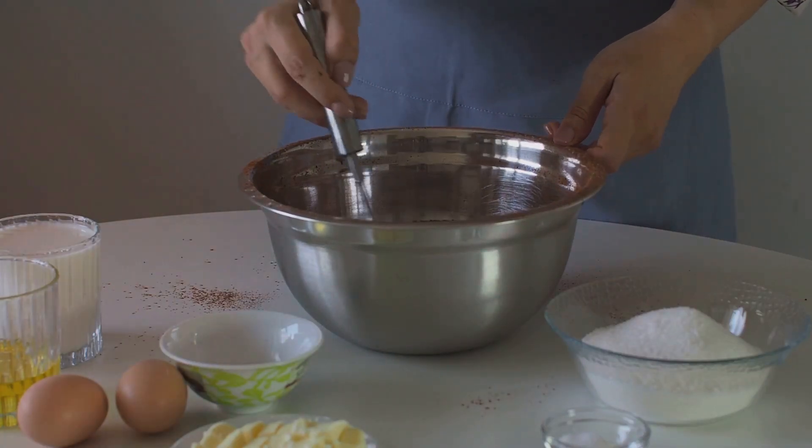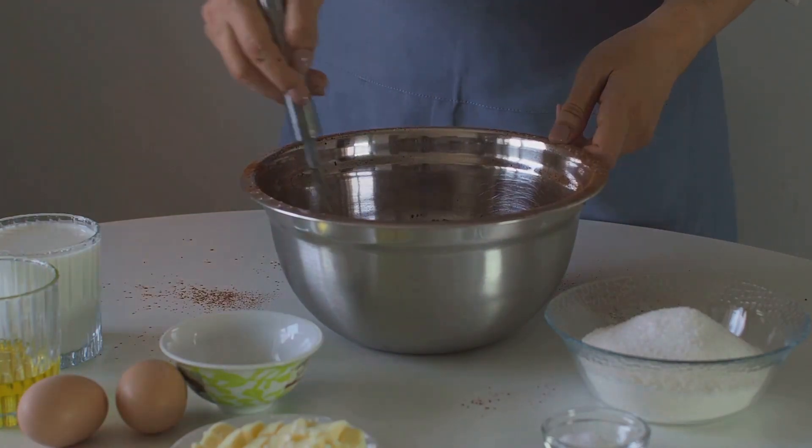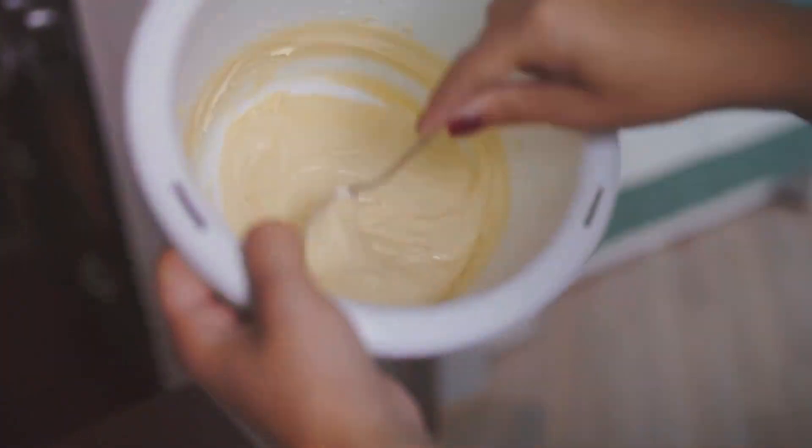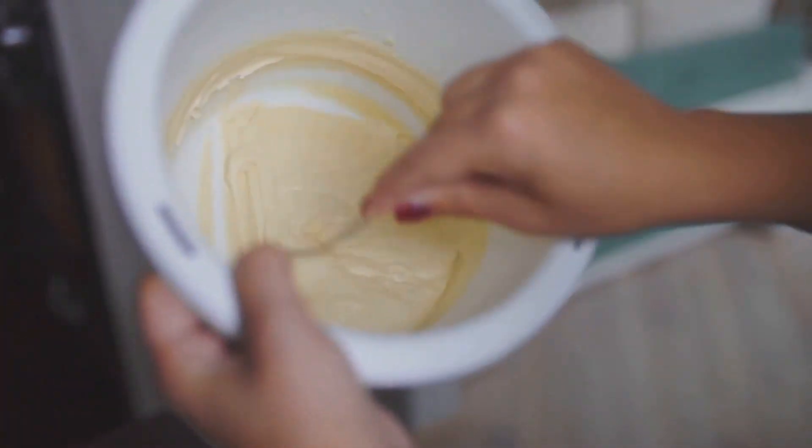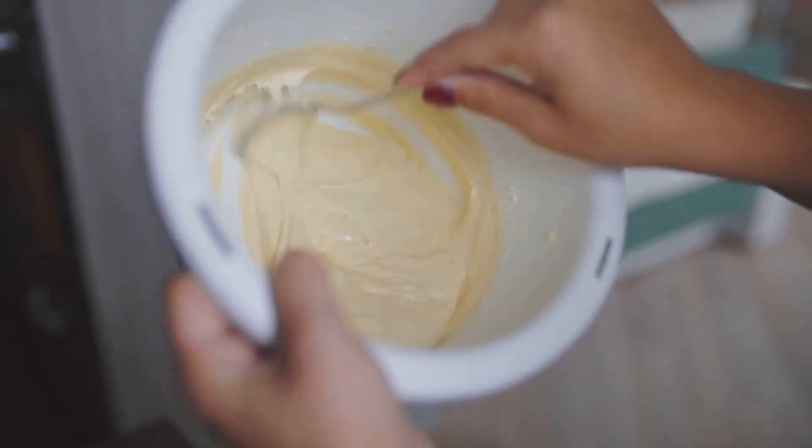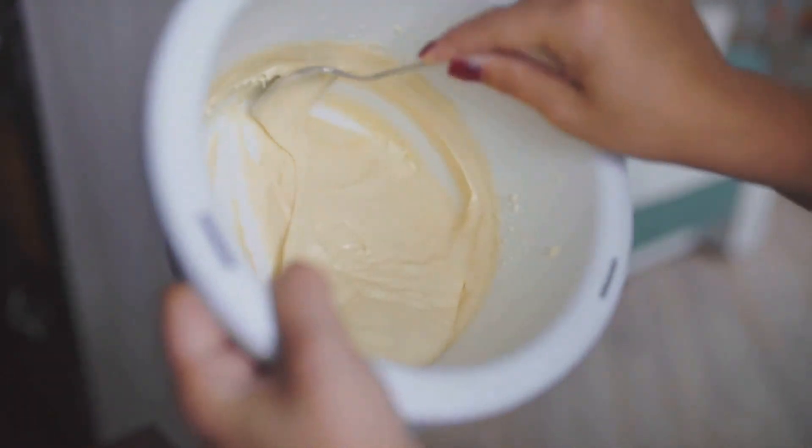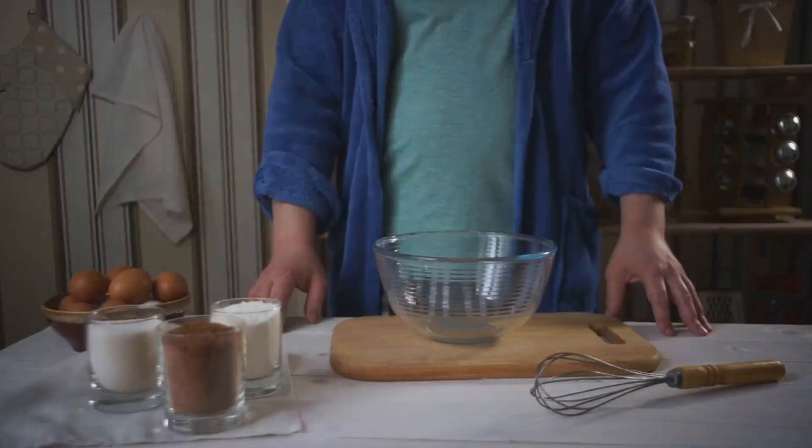Imagine you're baking a cake. You mix the ingredients, put it in the oven, and voila! After some time, you have a delicious cake. But have you ever thought about why this process doesn't happen in reverse? Why doesn't the cake unbake itself?